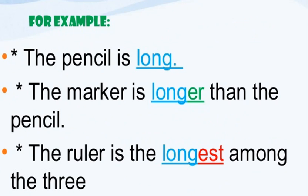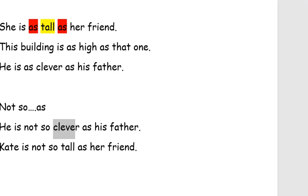The pencil is long — qələm uzundur. The marker is longer than the pencil — marker karandaşdan daha uzundur. İki müqayisə var. The ruler is the longest among the three — xətkeş o biri üçündən ən uzunudur. Demək, təkrar edirəm: tək hecalı sifətlərin müqayisə dərəcəsi -er şəkilçisi ilə düzəlir.